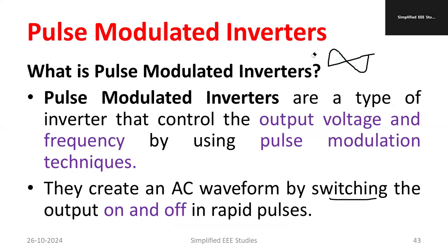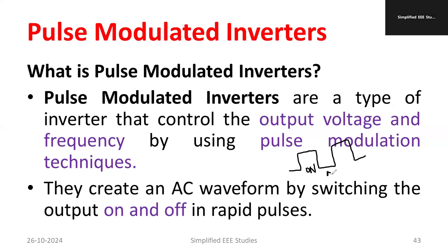PWM will be having both an on period and an off period. The pulse will have an on period and an off period. Together we call it the total time period. The total time period is the sum of the on period and the off period. If you want to calculate the duty cycle, it is the ratio of the on period divided by the total time period.